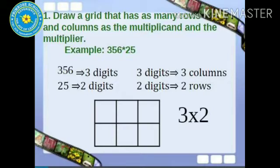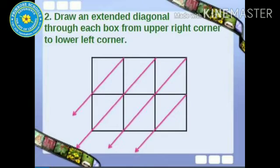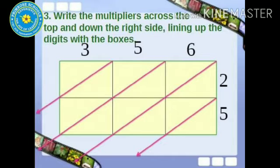Next, draw an extended diagonal through each box from upper right corner to lower left corner. Write the multipliers across the top and down the right side, lining up the digits with the boxes.